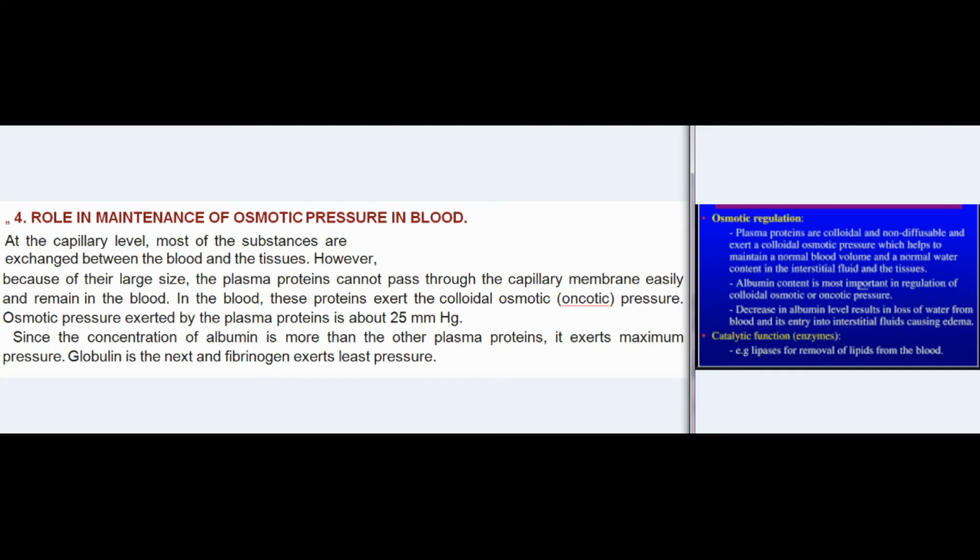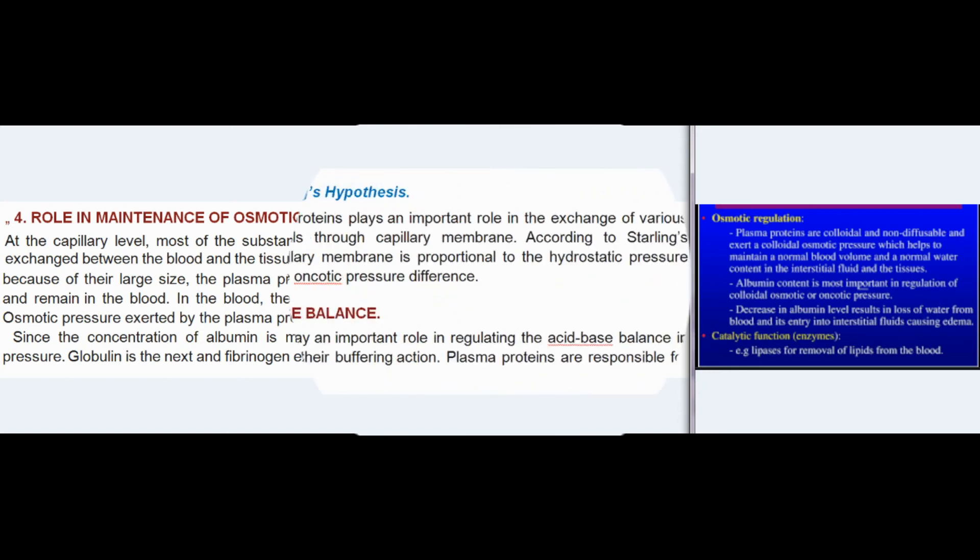Because of their large size, plasma proteins cannot pass through the capillary membrane easily and remain in the blood. These proteins exert colloidal osmotic (oncotic) pressure of about 25 mmHg. Since the concentration of albumin is greater than other plasma proteins, it exerts maximum pressure; globulin is next, and fibrinogen exerts the least pressure.